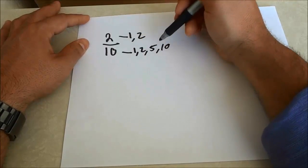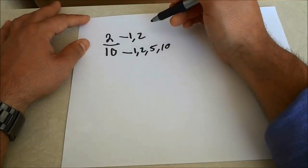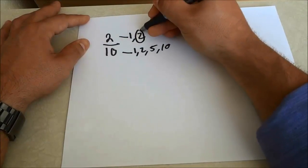Now we have to look at both of the sets of factors and find the greatest common factor. So the greatest common factor is 2, right here, so I'll just circle it.